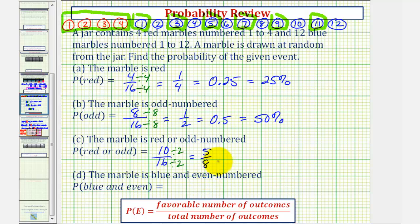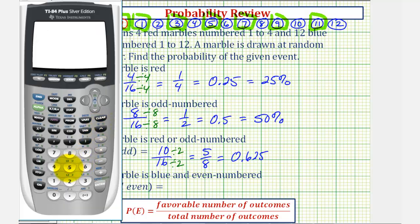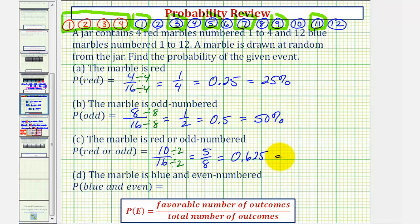We should recognize this as 0.625 as a decimal, but we can always divide to check. Notice five divided by eight is 0.625. As a percent, we'd have 62.5%.